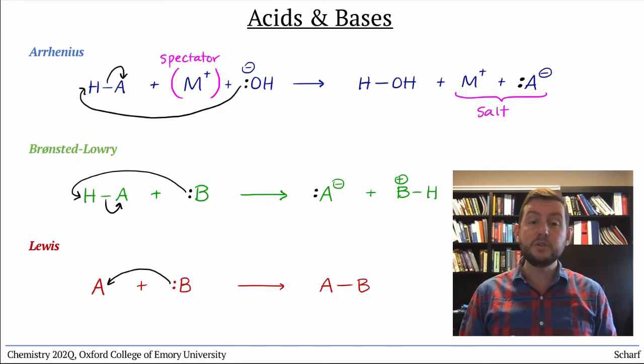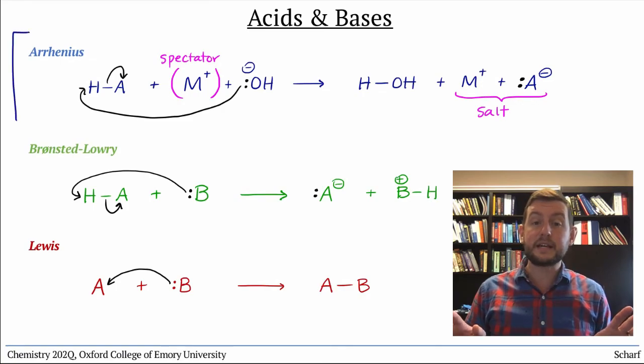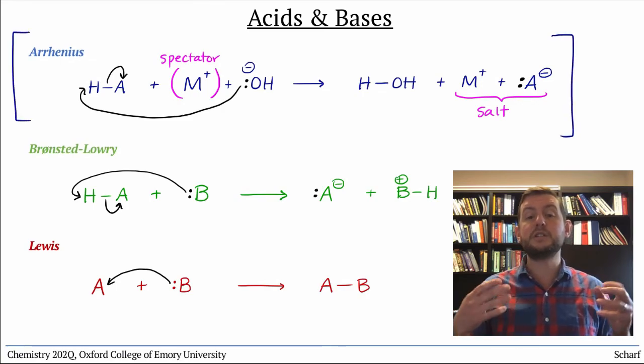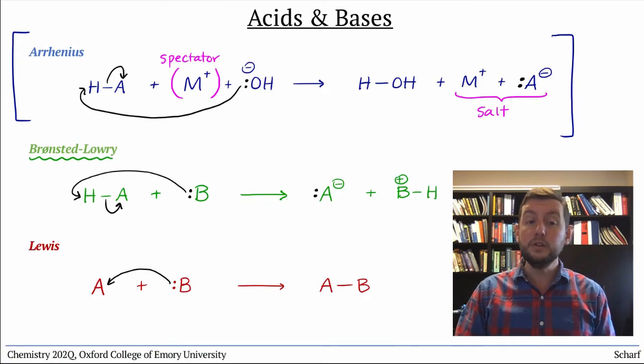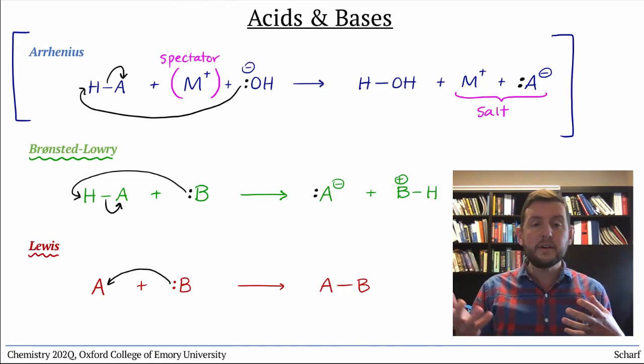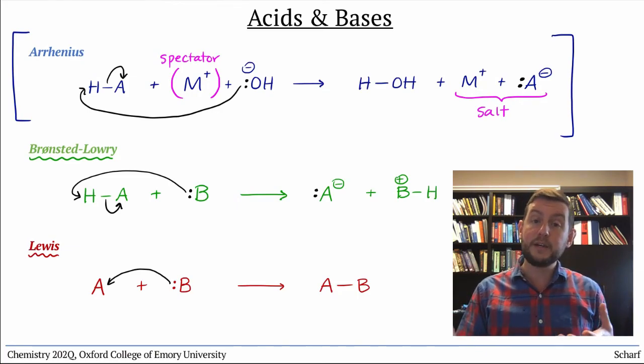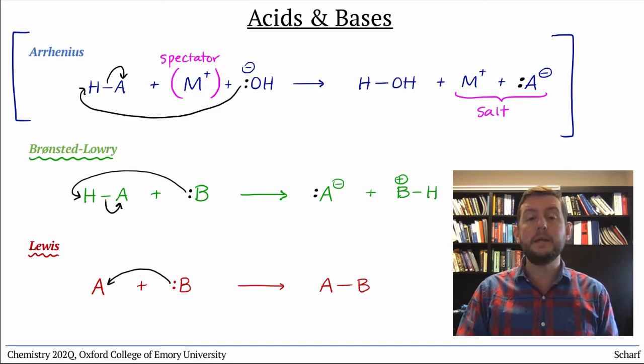In Chemistry 202, we'll never discuss Arrhenius acids and bases, because they're just a specific subset of Bronsted-Lowry acids and bases. But we will talk about both Bronsted-Lowry and Lewis acids and bases, and we'll usually discuss them separately. The majority of our discussions will be on Bronsted-Lowry acids and bases, and you'll learn about them in more detail in the next several videos.